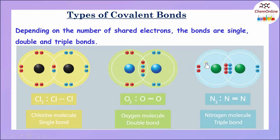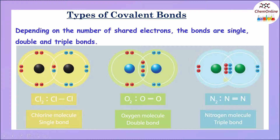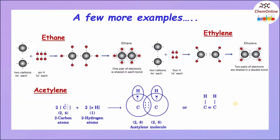Now, consider the formation of a nitrogen molecule. Nitrogen has only five electrons in its outermost shell, which means each nitrogen atom requires three more electrons to complete the octet. So, three electrons from each nitrogen atom are shared, forming a triple bond in the nitrogen molecule. Let us see some more examples involving single, double, and triple bonds.